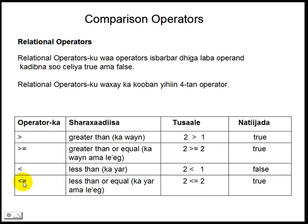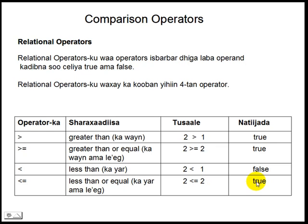Ugu dambeyntii, operator kan magiciisu waa less than or equal to, oo afsomaali ko ah kayar ama la ag. Tusaalihi sana oo ah two is less than or equal to two, waxaa lo akhriaa sidhan: lambar kan labo makkayar ya hay amammal la ag ya hay lambar kan kale ee issaguna ah labo. Jawabtu wa haa sababtu ah labadha lambar makala yara bal saway isli agyihin, sidaas darteed natiijaduna wa true.